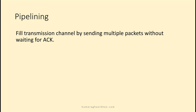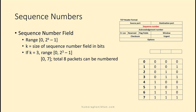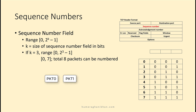Without waiting for their acknowledgements, we can efficiently use channel bandwidth. As we are sending many packets on the transmission link, we need a bigger sequence number field to number packets. If the sequence number field is only one bit long, we can get only zero and one to number our packets.